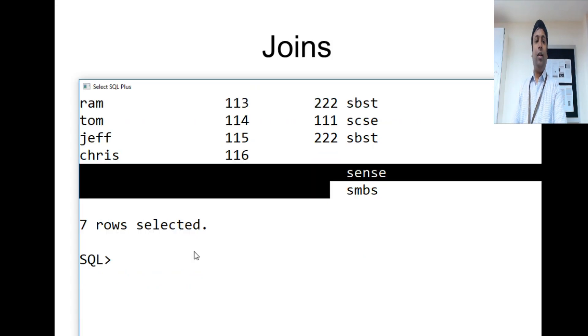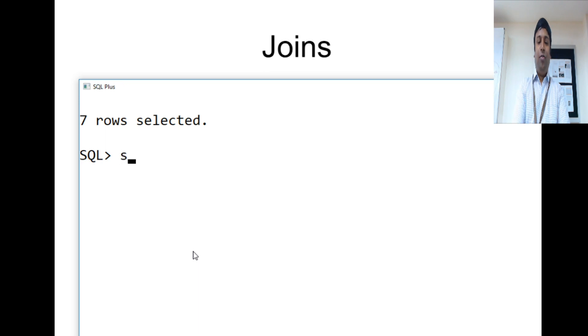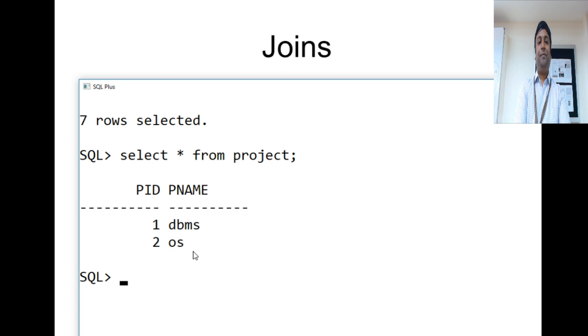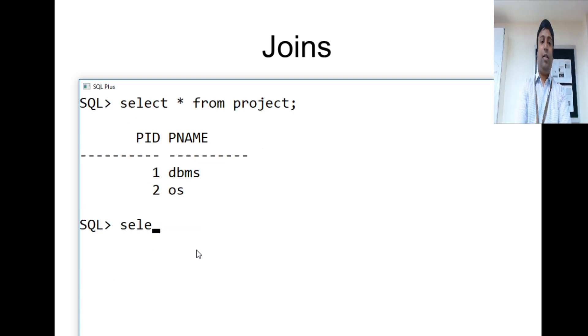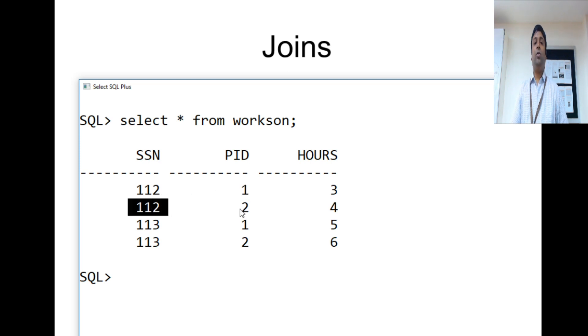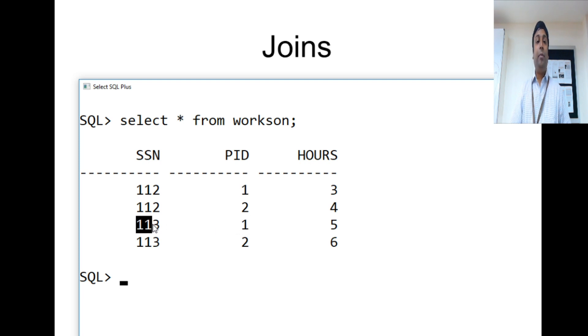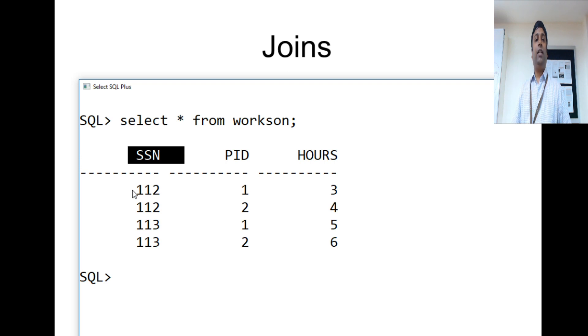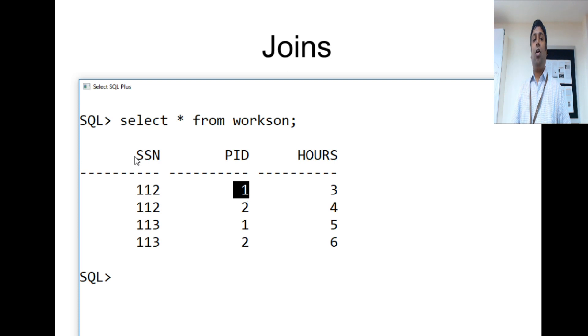Here is one more exercise. We have an employee table, a department table, a project table, and a works_on table. The works_on table gives a mapping of which employees are working on which projects — employee ID 112 works on project ID 1 and also project ID 2. One employee can work on multiple projects, and one project can have multiple employees. Since neither SSN alone nor project ID alone can be the primary key due to duplicate values, the combination of SSN and PID should be the composite primary key.